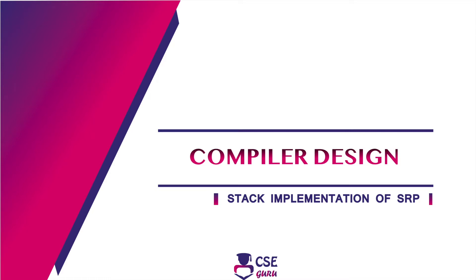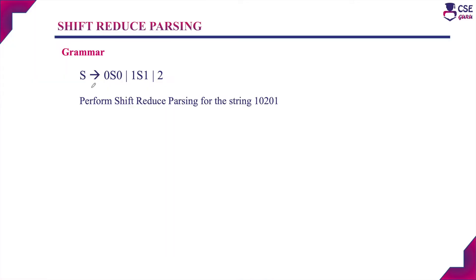Welcome to CSE Guru. In this session, we will discuss an example to implement shift reduce parsing. The grammar is S derives 0S0, 1S1, or 2. Perform shift reduce parsing for the string 1 0 2 0 1.